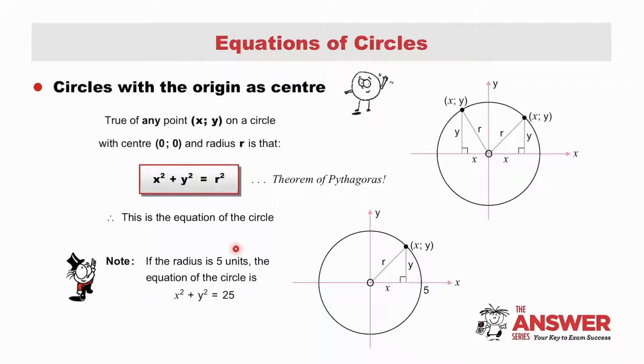For example, if the radius is 5 units, the equation of the circle is x squared plus y squared equal to 25, the square of 5. If the radius is 9 units, the equation is x squared plus y squared equal to 81.